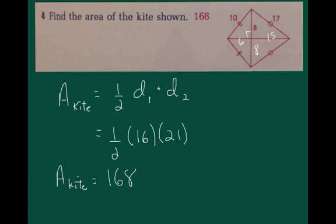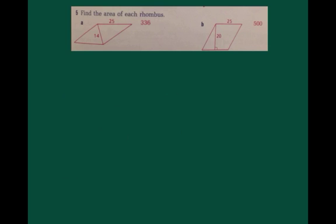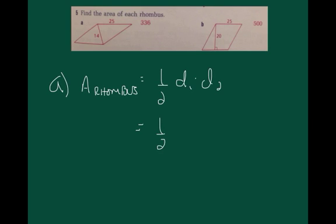Okay, let's take a look at number 5 also, because it's just a good example of how more than one formula can apply to the same type of a figure. Okay, if you look at part A, you can see that we're trying to find the area of this rhombus, which we can use the area of a kite formula for, because a rhombus is a kite.